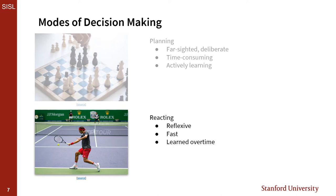Conversely, when we play tennis, we don't really think about what we're doing—we just sort of react. It's a reflexive and fast process, but ultimately still results in a sequence of actions that lead us to our goal. The difference is that we're not actively learning while playing tennis, but rather relying on intuition built up over time.